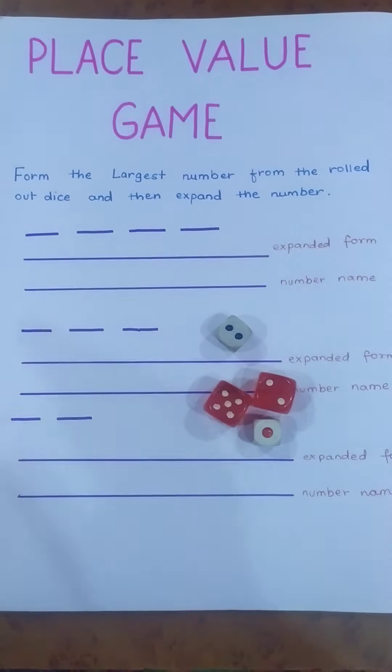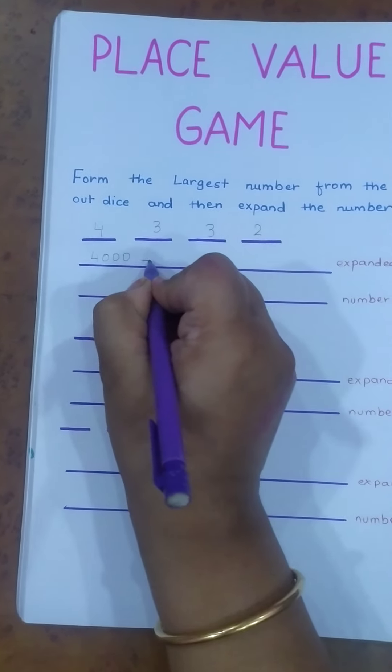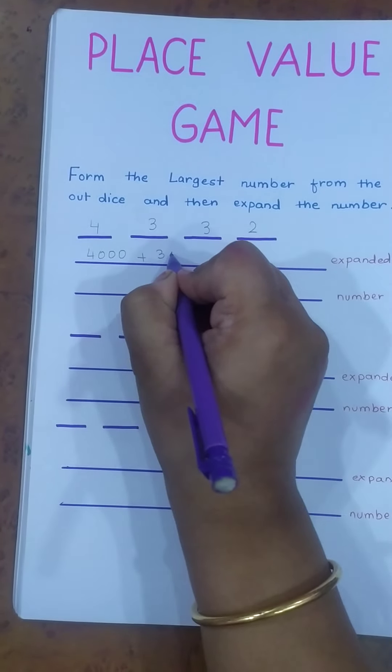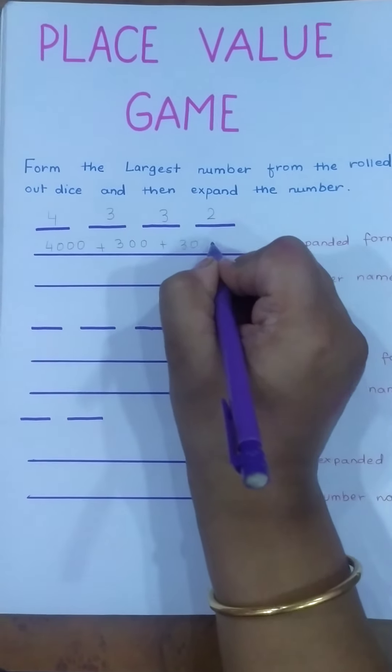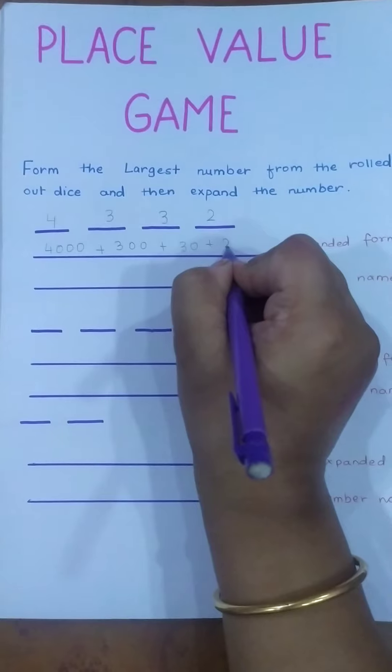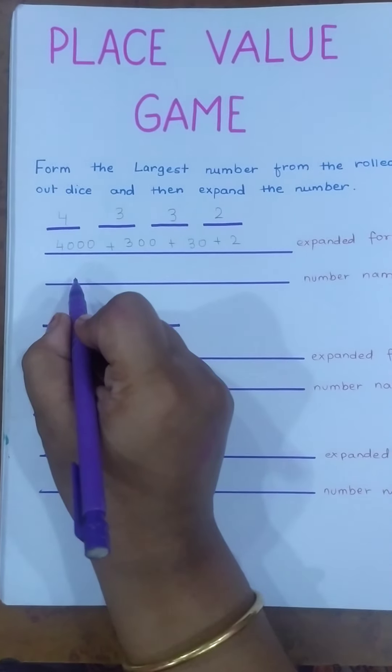Now let's expand this number. So it will be 4000 plus 300 plus 30 plus 2. This is the expanded form. Then the child has to write the number name.